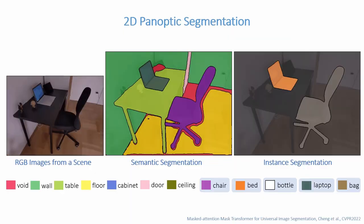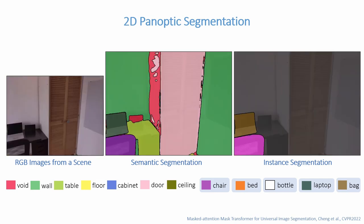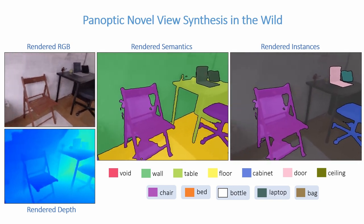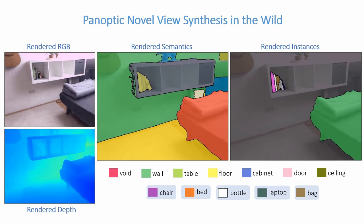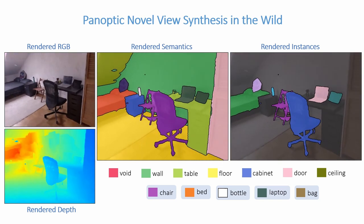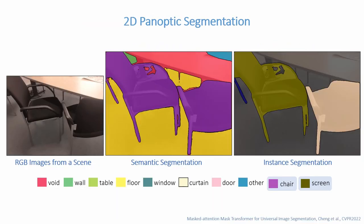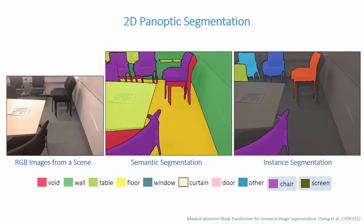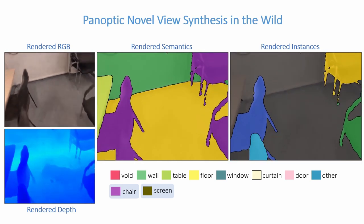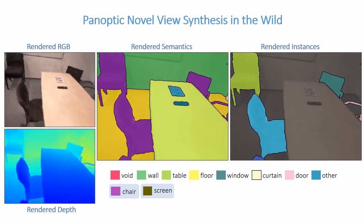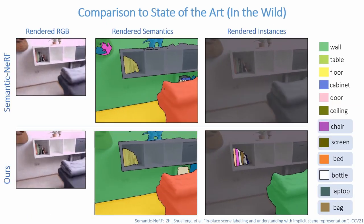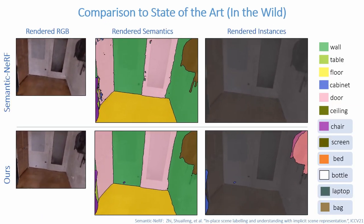Here are some results on more in-the-wild captured scenes. 2D panoptic segmentation struggles to maintain label correctness and consistency. Compared to the 2D panoptic segmentation method with which our model was trained, we can synthesize consistent panoptic segmentations from novel views. We further compare our method against state-of-the-art across diverse data, and achieve significant improvements.